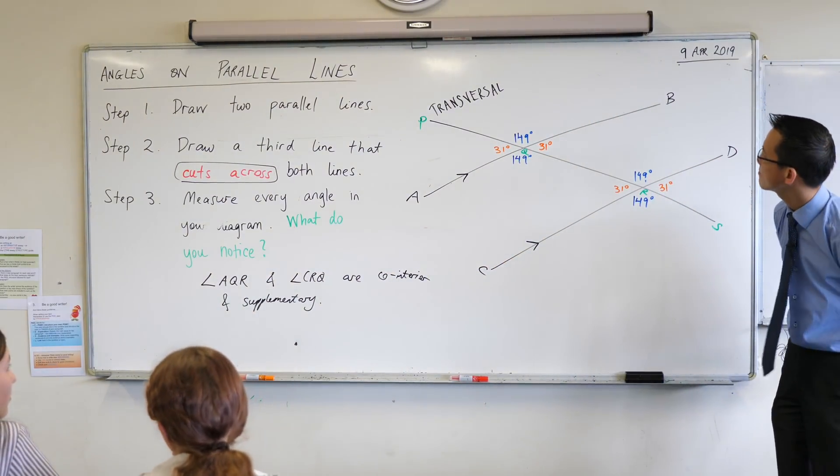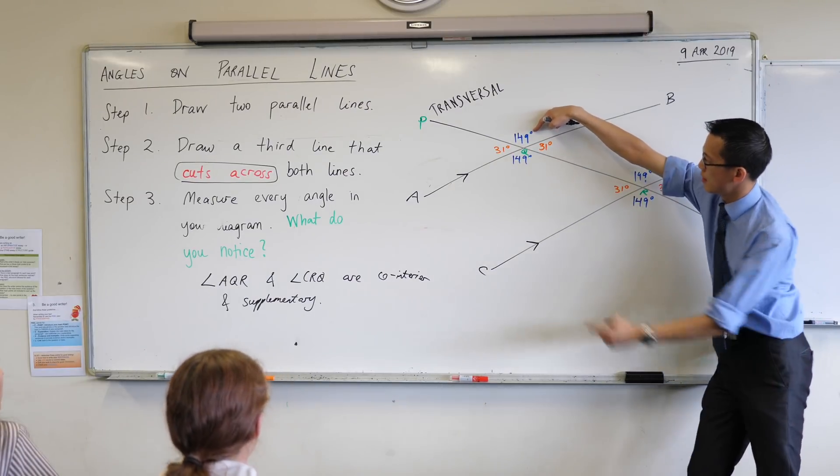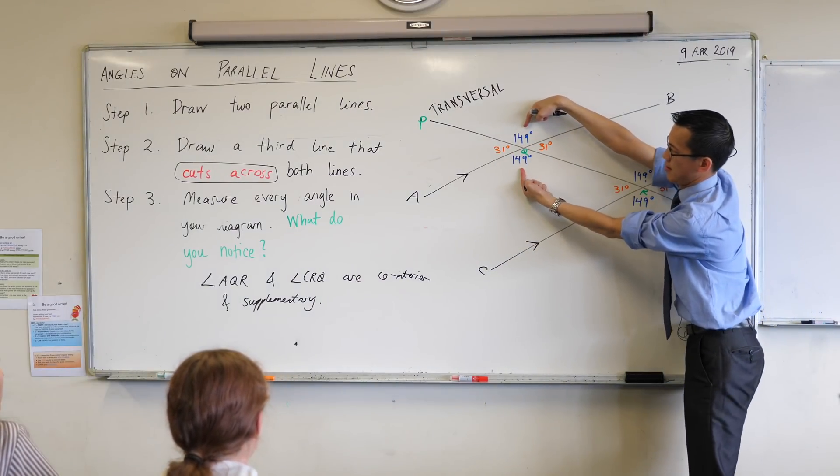Leah what do you see? Angle P, Q, B and A, Q, R are vertically opposite.